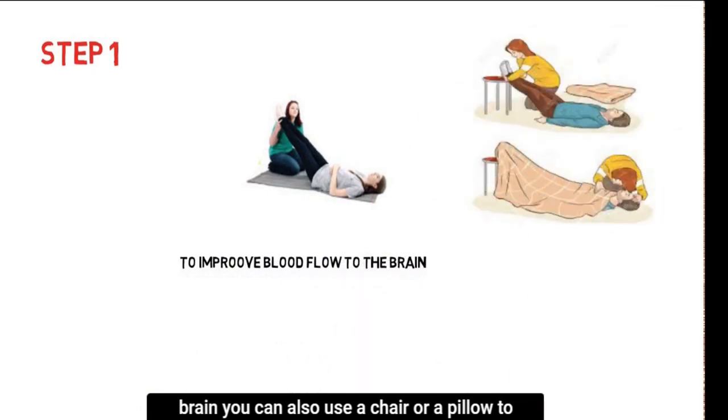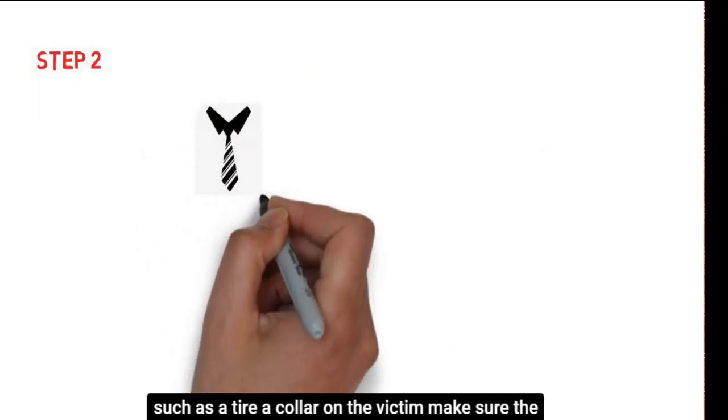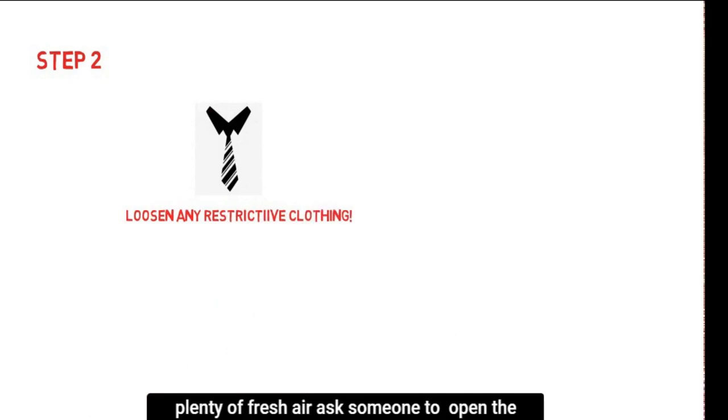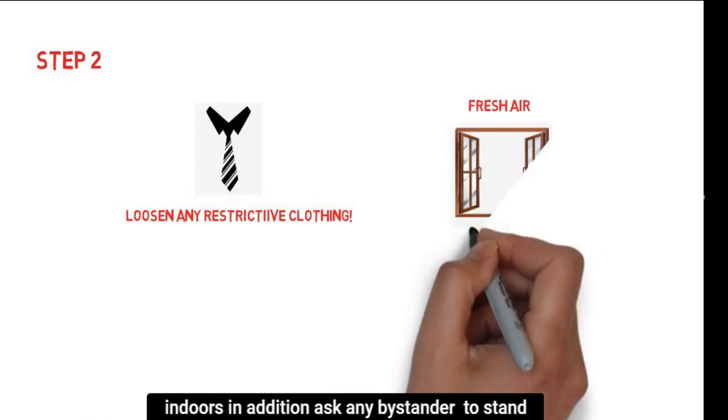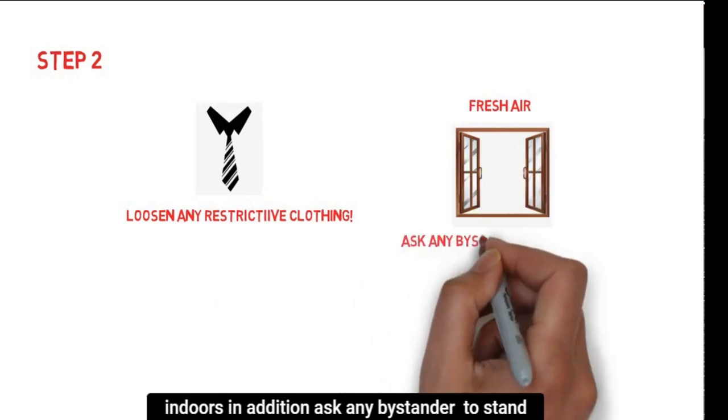Step 2: Loosen any restrictive clothing such as a tie or a collar on the victim. Make sure that the casualty has plenty of fresh air. Ask someone to open a window if you are indoors. In addition, ask any bystanders to stand clear.